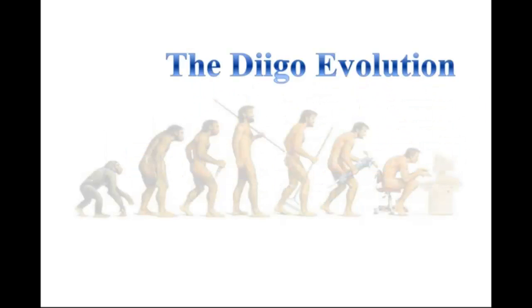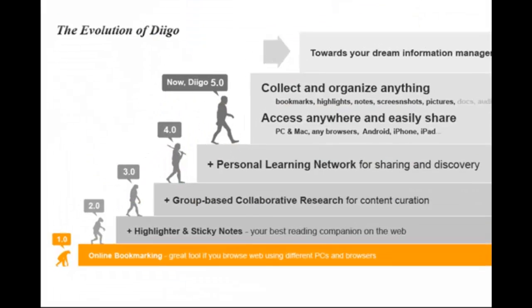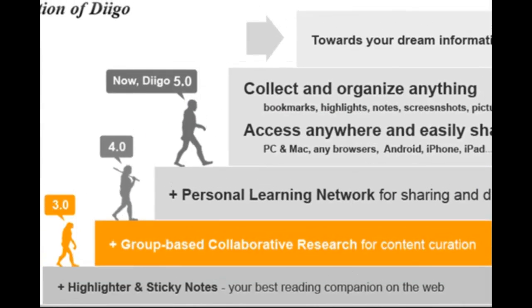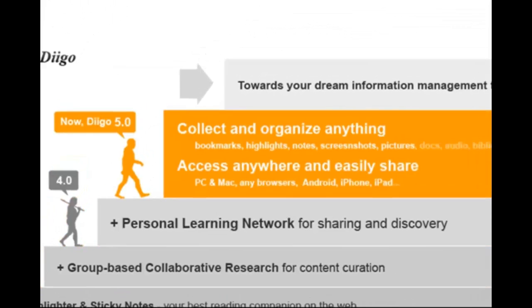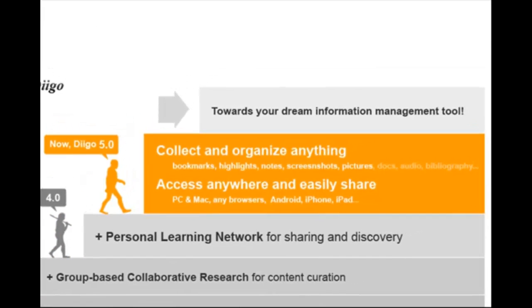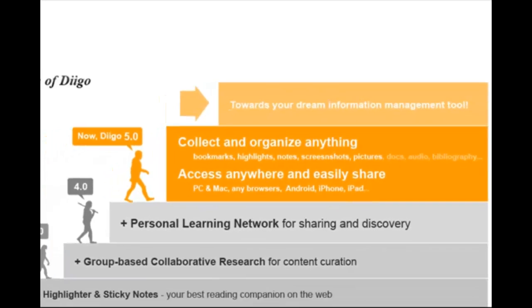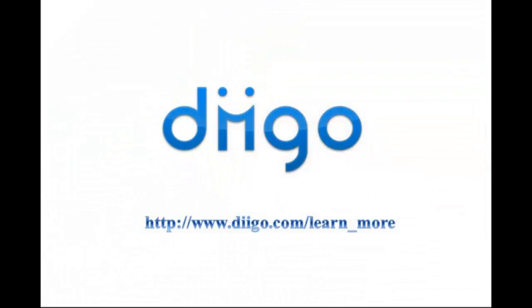Diigo has evolved over the past few years from a simple online bookmarking tool, to incorporating web annotation, to enabling knowledge sharing and group-based collaborative research, and finally moving closer to its ultimate vision: providing users with the best cloud-based information management tool for collecting, organizing, and accessing any information anywhere. To learn more about Diigo, please check out their other video tutorials.